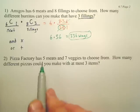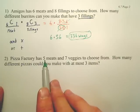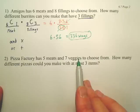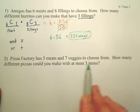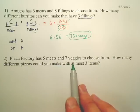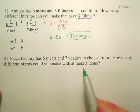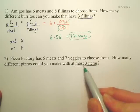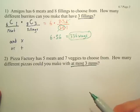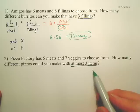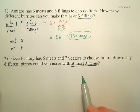Okay, the next one: Pizza Factory. To choose from, we have five meats and seven veggies — they probably have more than that. Assume it's all the same size and they have cheese on them. How many different pizzas could you make that have at most three items? If you have at most three items, could you have a no-item cheese pizza? Absolutely. Could you have a one-item, two-item, or three-item pizza? Yes.